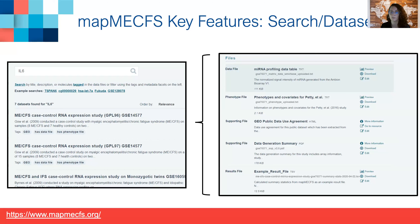One of the most unique features of the tool is that you can search a gene or an analyte of interest, and the search space goes beyond just the title, description, or metadata. We're actually searching within the data files and result files. So in this case, when we searched the IL-6 gene, we identified data sets where that gene had been analyzed.